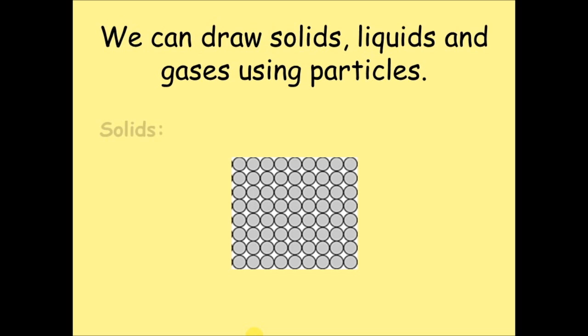Solids are drawn like this. The particles are in very neat rows. They are touching at their edges which shows they are joined together. Because the particles are so compact and can't flow over each other, this means that solids are hard and rigid.